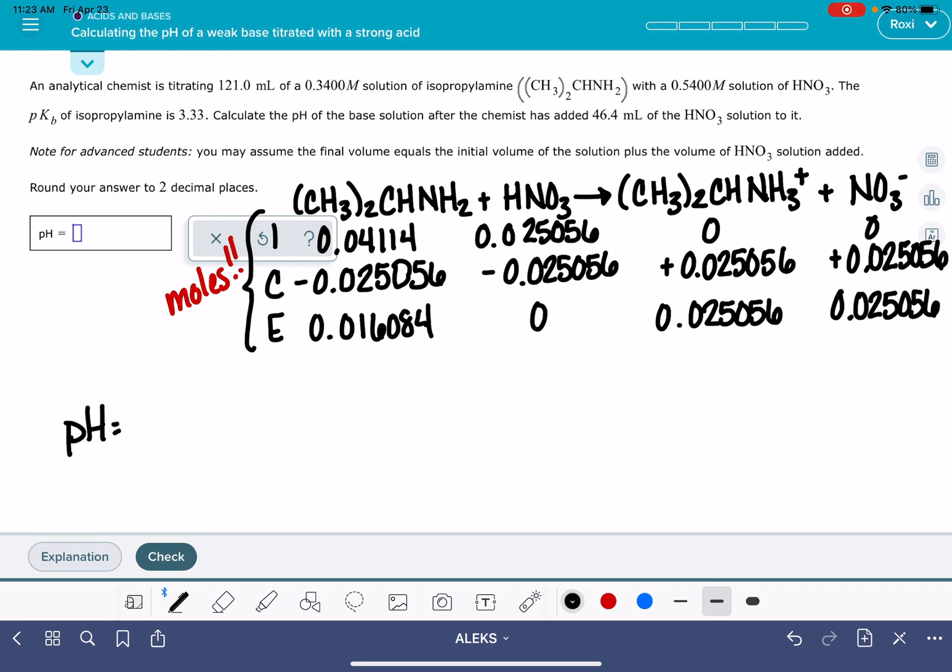pH equals pKₐ plus the log of the concentration of the base over the concentration of the acid. The problem is going to give you either the pKₐ or the pKᵦ, one or the other. I have been given the pKᵦ, and that's a really easy conversion. 14 minus 3.33 is going to give me my pKₐ, 10.67.